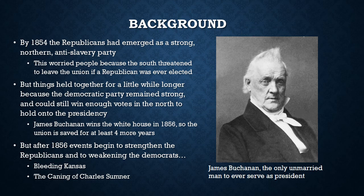But things hold together for a little while longer because the Democratic Party remains strong — not just in the South, but they can also win votes in the North. They win enough votes in the North to hang on to the presidency. So in the presidential election of 1856, James Buchanan wins for the Democrats and keeps the North and the South together for at least four more years.